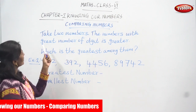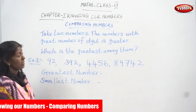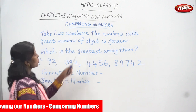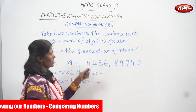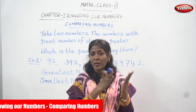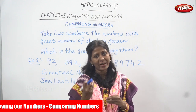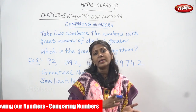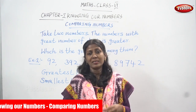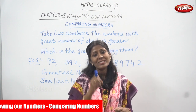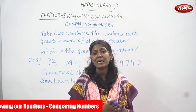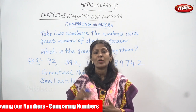Take two numbers. The number with a greater number of digits is greater. If you want to find out the greater number, you count the digits only. Number of digits is very important to find out the greater number. Whichever number has a greater number of digits is called the greater number.